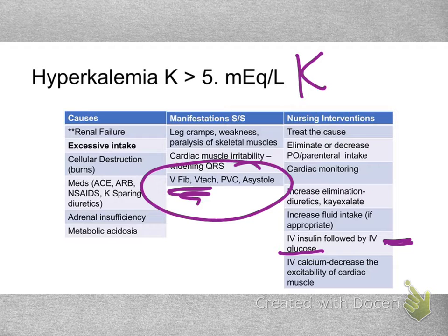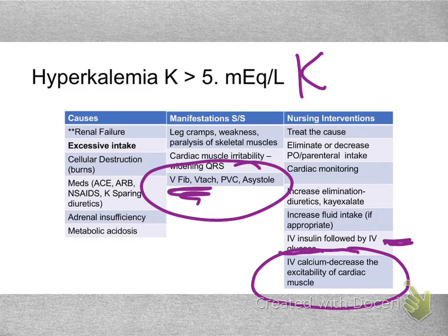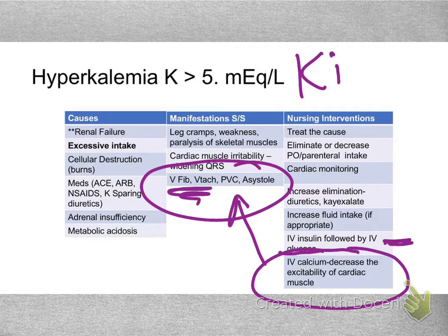If potassium is really high, we can give IV calcium gluconate to help decrease the excitability of the cardiac muscle. It does not bring down the potassium, but it helps prevent the patient from having V-fib or V-tach, which are lethal dysrhythmias.